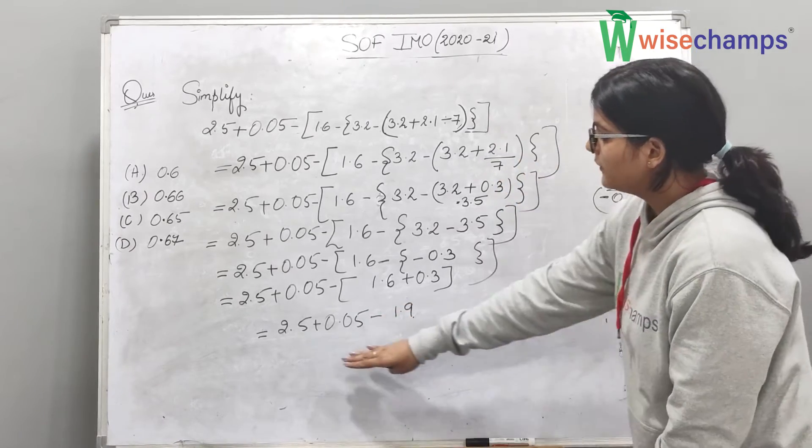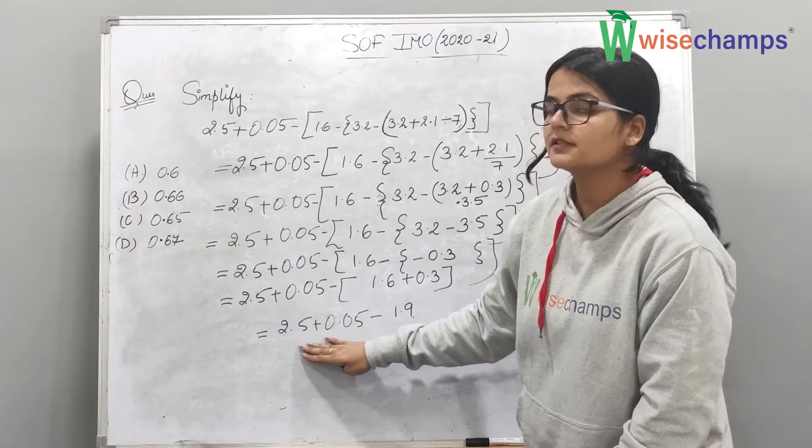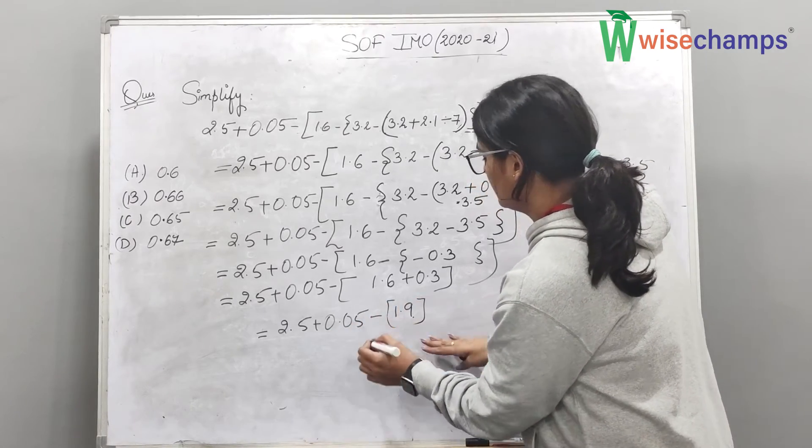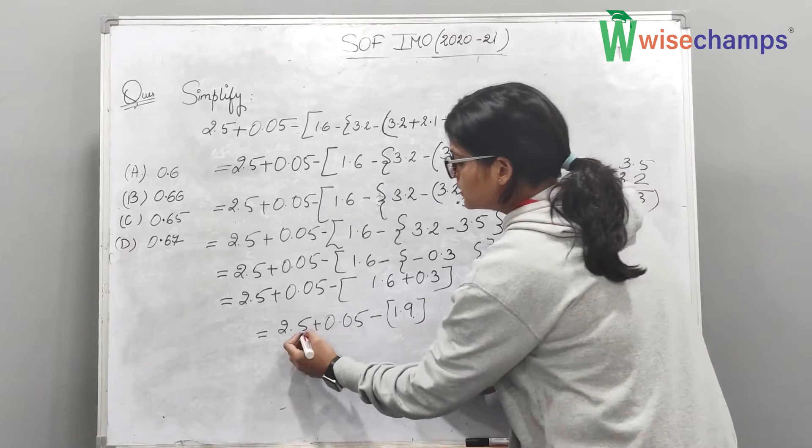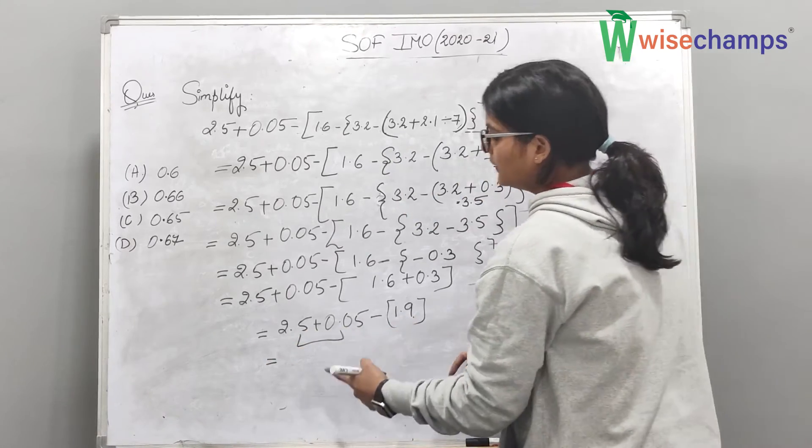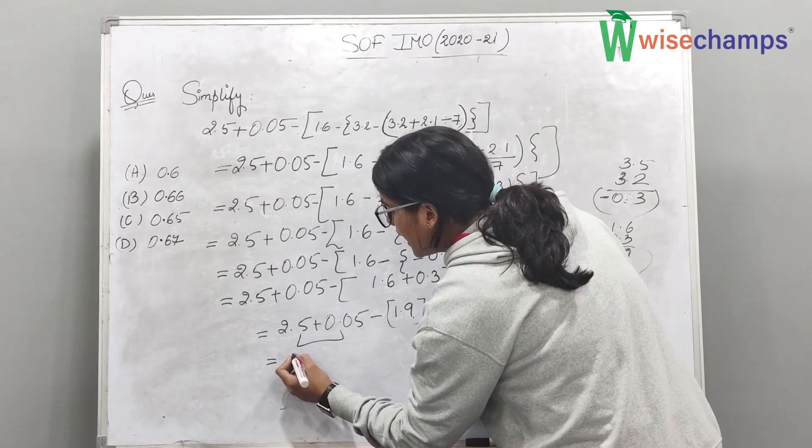Now, what we have to do? We will firstly add. We will add these two values. In BODMAS, before subtraction, we have addition. We have to do addition.